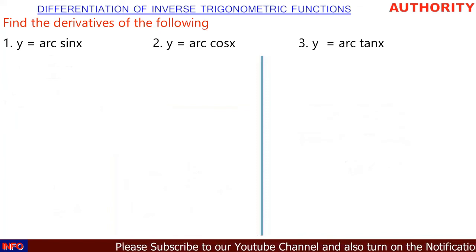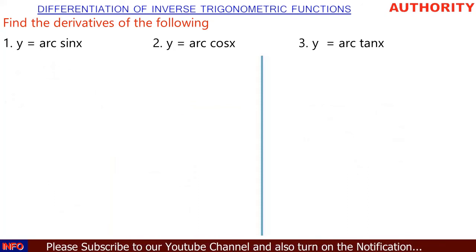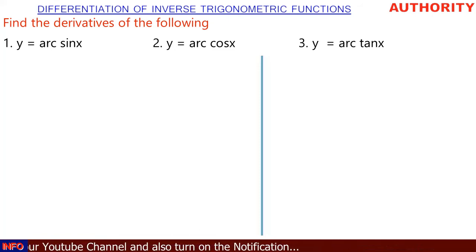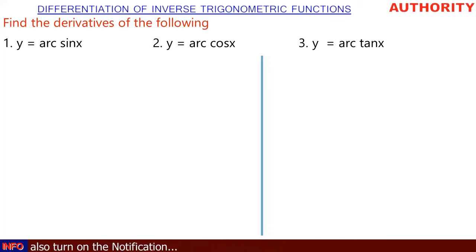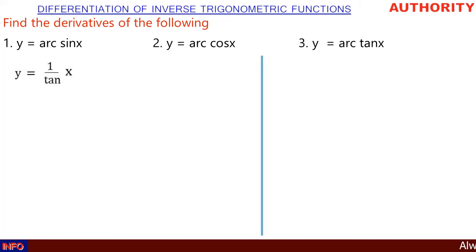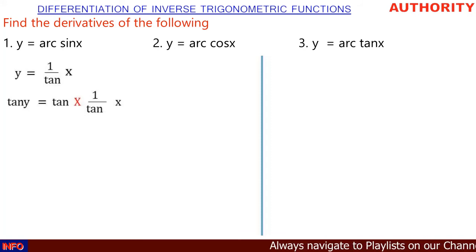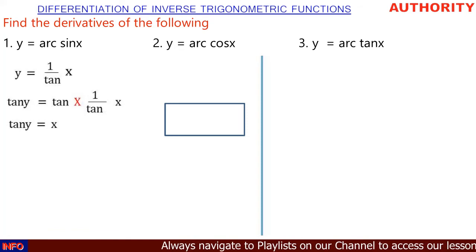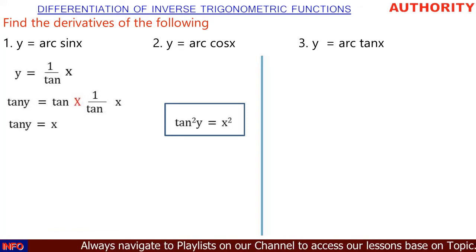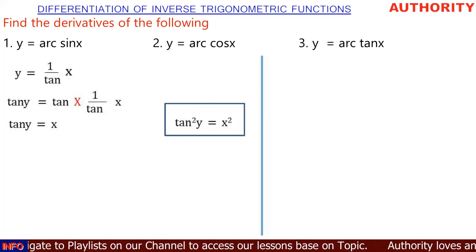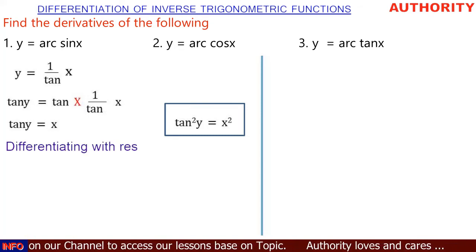For number two, y equals arccos(x) — follow the same method we just used for arcsin(x) to get the answer. For number three, y equals arctan(x). Arctan(x) is the same as one over tan(x). If we multiply both sides by tan, we get tan(y) equals x. And tan²(y) equals x².